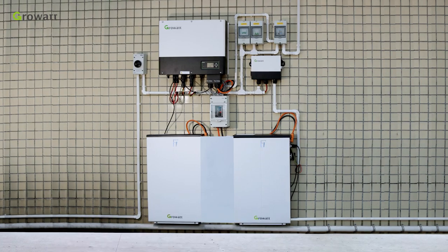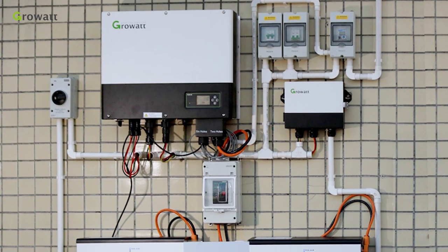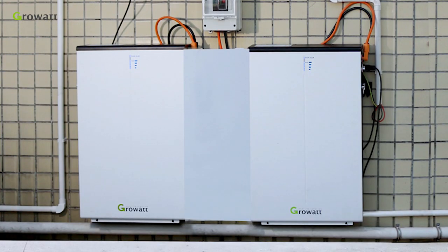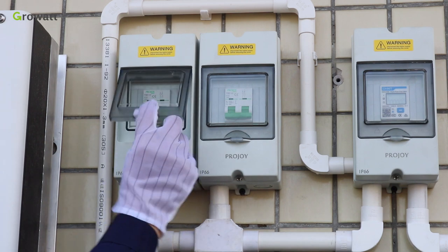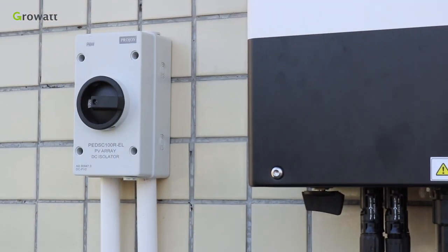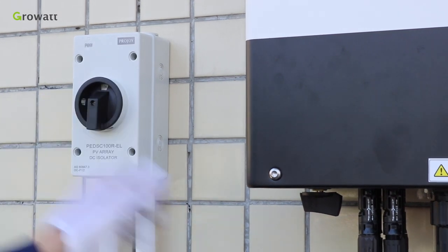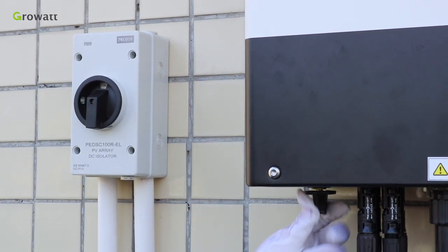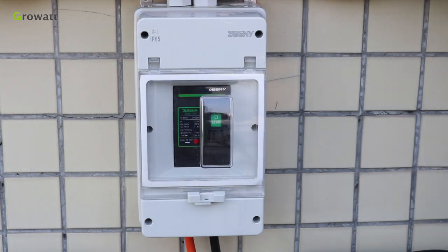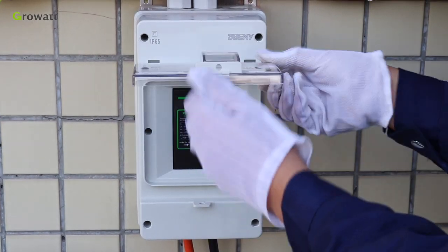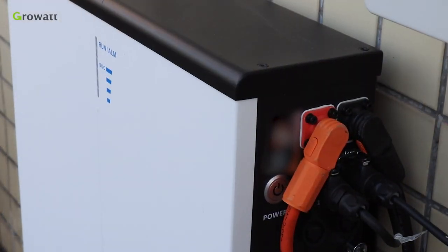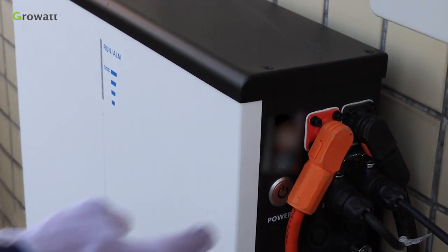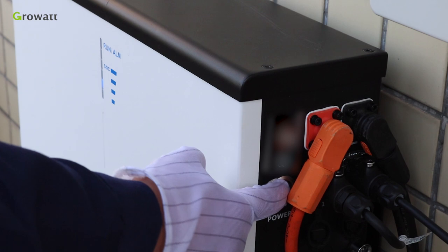After all the installation is finished, here are some steps to power on the whole system. 1. Turn on the AC breaker between the inverter and grid. 2. Turn on the DC breaker of solar input and the PV switch of inverter. 3. Turn on the DC breaker for the battery system. 4. Press the power button of the two batteries within 30 seconds and observe the LED indication finally.